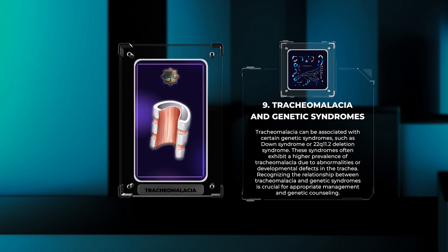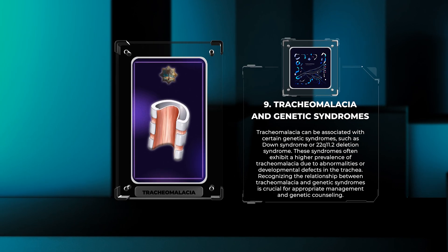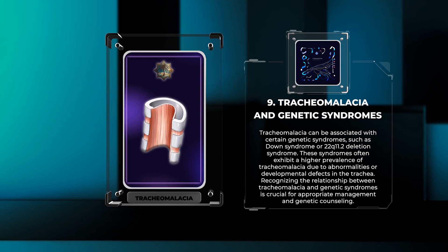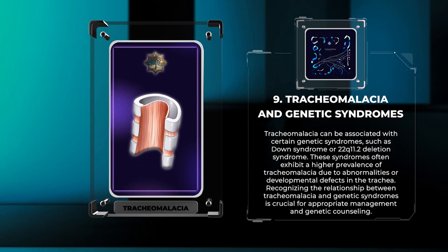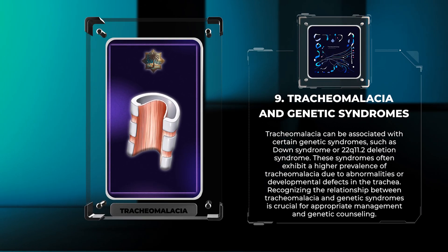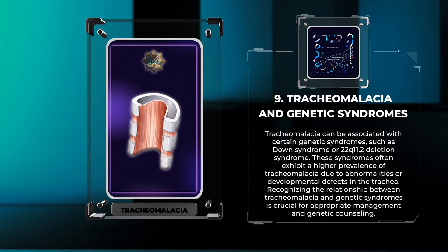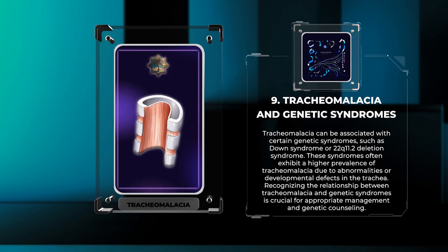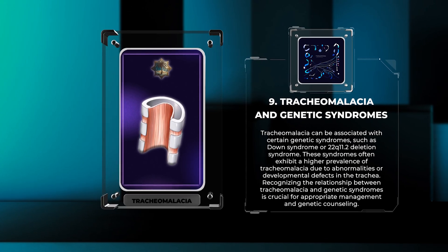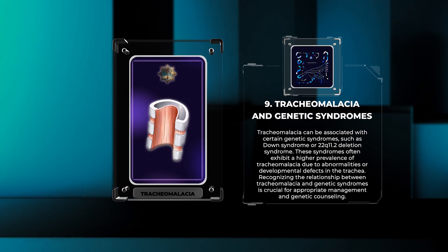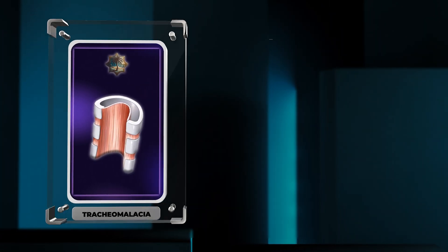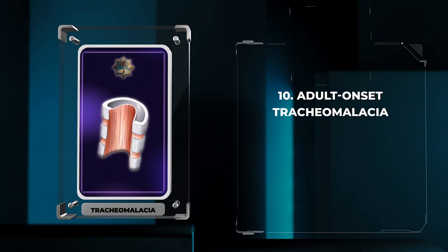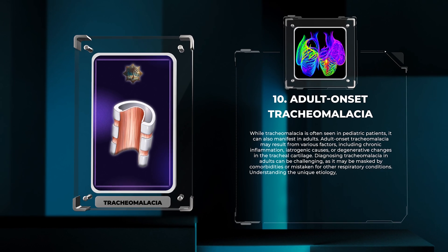Tracheomalacia can be associated with certain genetic syndromes, such as Down syndrome or 22q11.2 deletion syndrome. These syndromes often exhibit a higher prevalence of tracheomalacia due to abnormalities or developmental defects in the trachea. Recognizing the relationship between tracheomalacia and genetic syndromes is crucial for appropriate management and genetic counseling.